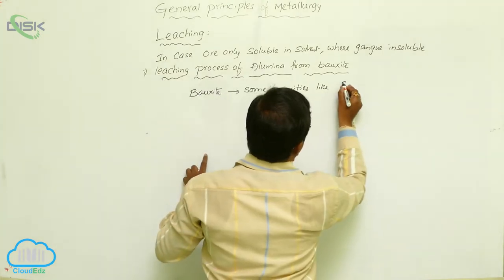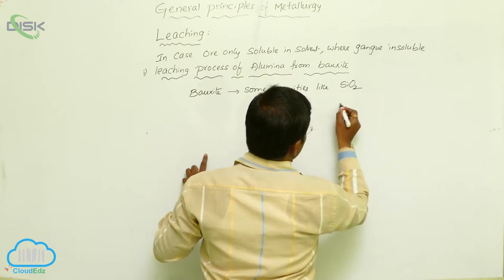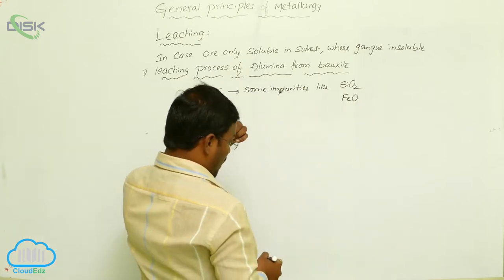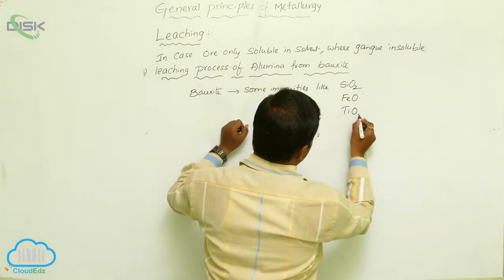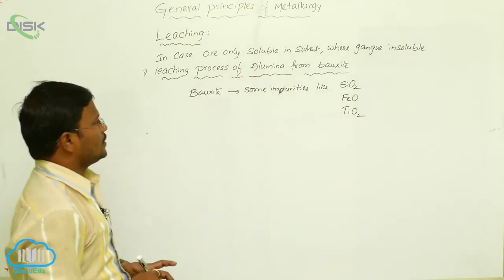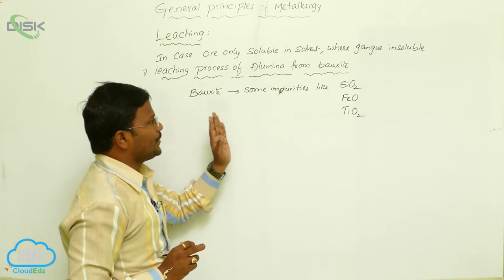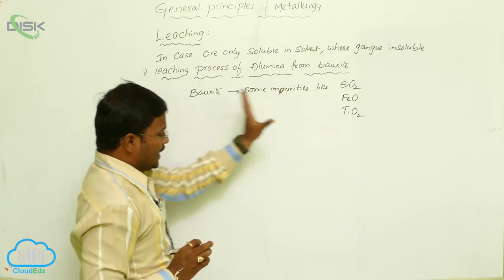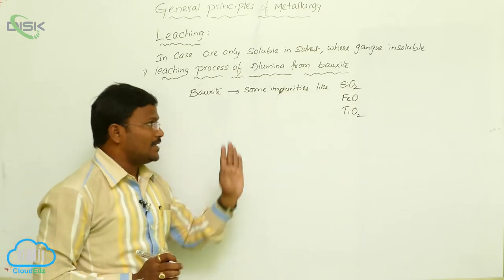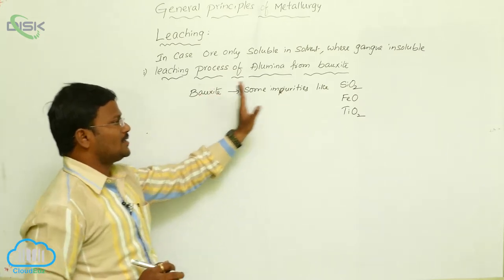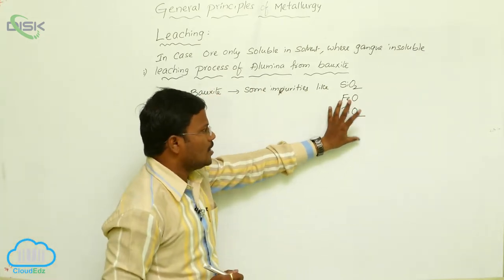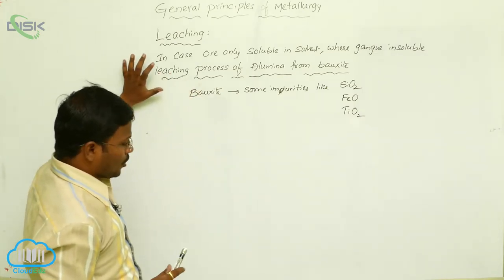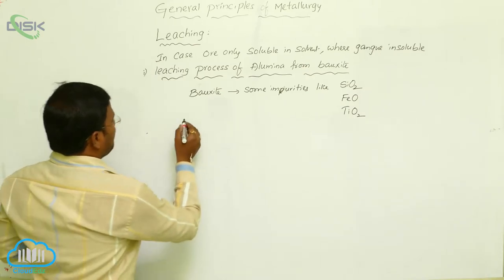What are the impurities generally present with bauxite? These are silica (SiO2), iron oxides (FeO), and titanium oxides. To eliminate these types of impurities — considered as gangue — from the bauxite ore, we have to use the leaching process.